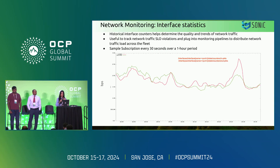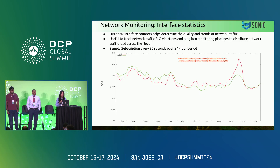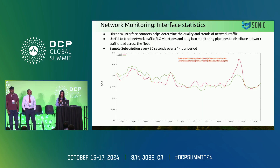A different metric we use is for network monitoring — both interface and queue statistics. This graph plots bytes per second across a one-hour time period, also using a sample subscription every 30 seconds. These counters are all in-packets and out-packets across the OpenConfig interfaces model. We use this to track network SLO violations, plug into our monitoring pipelines, see how to distribute the interface network load across switches and devices, and understand the trend and history of traffic across the production fleet.